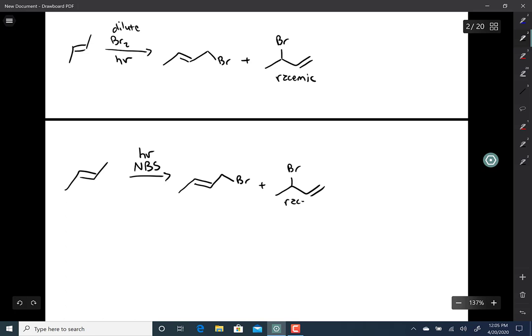What you end up doing is getting what's called allylic bromination. NBS is short for N-Bromo-Succinimide and it looks like this.